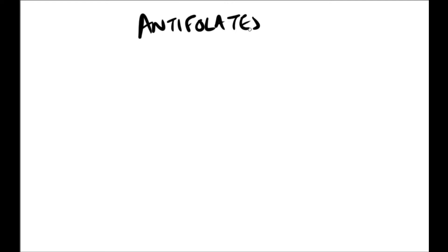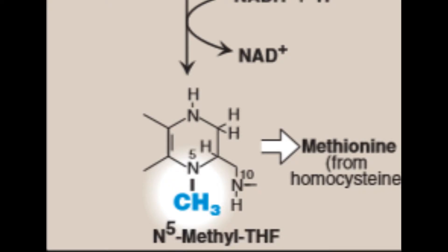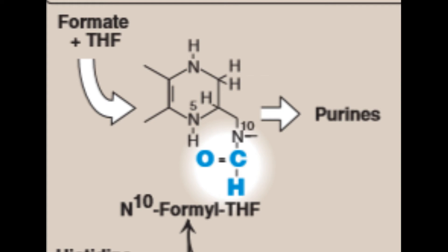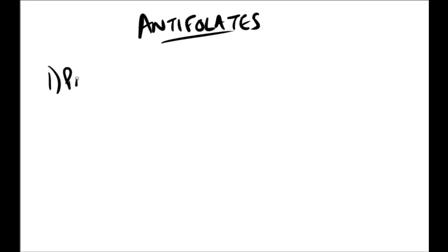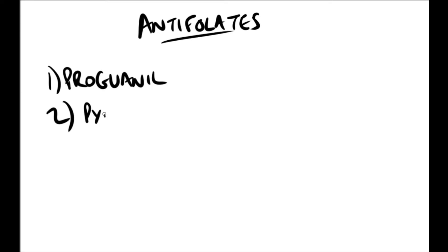Anti-folates are a class of anti-metabolite medications that antagonize the actions of folic acid, which is vitamin B9. Folic acid's primary function in the body is as a cofactor to various methyltransferases involved in serine, methionine, thymidine, and purine biosynthesis. Anti-folates inhibit cell division, DNA/RNA synthesis, repair, and protein synthesis.